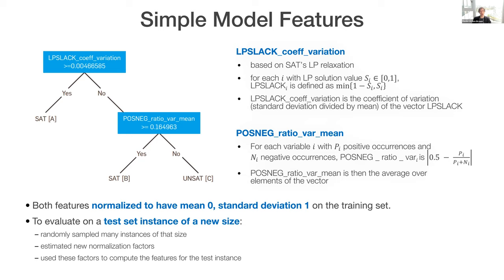Okay. So, the model says, let me compute the coefficient of variation of the LP slack vector, which I'll define in a second. If it's bigger than four thousandths, then return sat. Otherwise, look at this feature that has to do with the ratio of positive to negative occurrences of variables. And if that's a little bit unbalanced, then return sat, again, otherwise return unsat. That's the entire model. And it's able to give you 70% predictive value? Yeah. Isn't that crazy? Yeah.